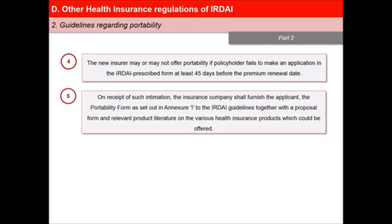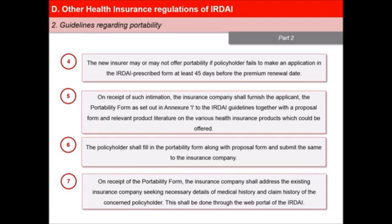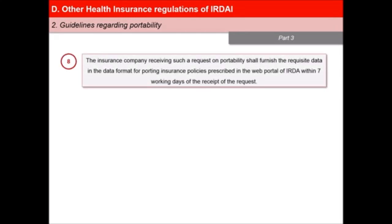Fifth, on receipt of such intimation, the insurance company shall furnish the applicant with the portability form as set out in Annexure 1 of IRDAI guidelines, together with a proposal form and relevant product literature on the various health insurance products which could be offered. Sixth, the policyholder shall fill up the portability form along with the proposal form and submit the same to the insurance company. Seventh, on receipt of the portability form, the insurance company shall address the existing insurance company seeking necessary details of medical history and claim history of the concerned policyholder. This shall be done through the web portal of IRDAI. Eighth, the insurance company receiving such a request on portability shall furnish the requisite data in the data format to port insurance policies prescribed in the web portal of IRDA within seven working days of the receipt of the request.